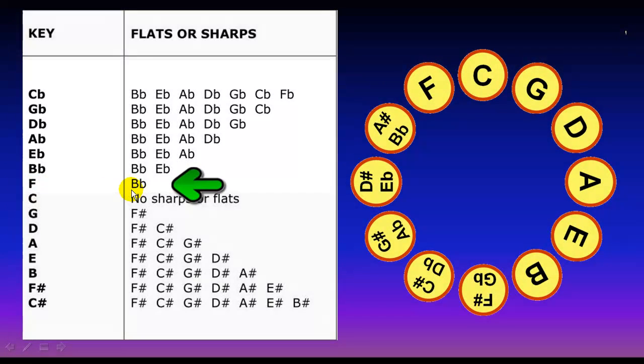For key of F, it is B flat. So you can begin in the reverse order from here: B, E, A, D, G, C, F.